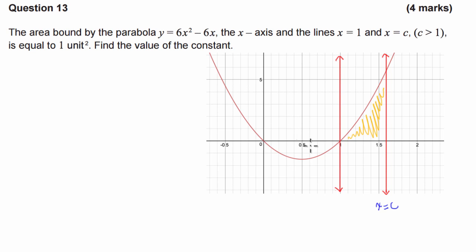First of all, we're going to have to, to work out the area bound by this shape, we're going to have to take the integral. So let's start with that. So how is this going to work for us? Well, we know that 1 has to be equal to the integral from 1 to, we don't know, let's call it c, of this function here, y equals 6x squared minus 6x dx.